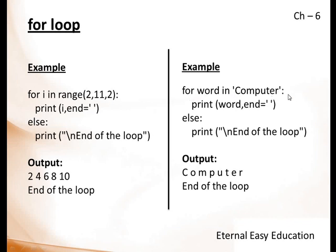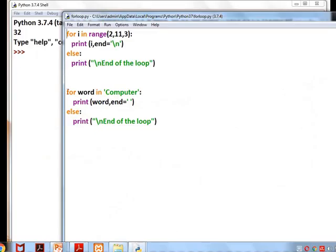Here word in computer print word, that means a variable. Here it is i, here it is word. In the first example it is given as a range, here they directly give the string. It will automatically fetch one by one, first letter, second letter, third letter. We will see in the editor. First one is for i in range(2, 11, 3), that means increment value is 3, print i. And here I have given a \n, meaning next line. Else print end of the loop. Did you notice the indent space? It is very important. Without the space there will be an indent error.